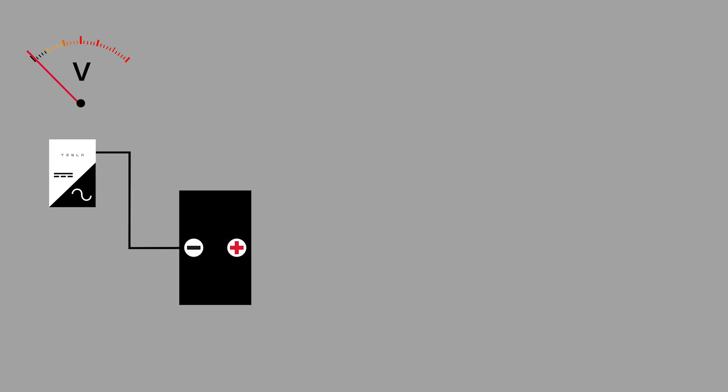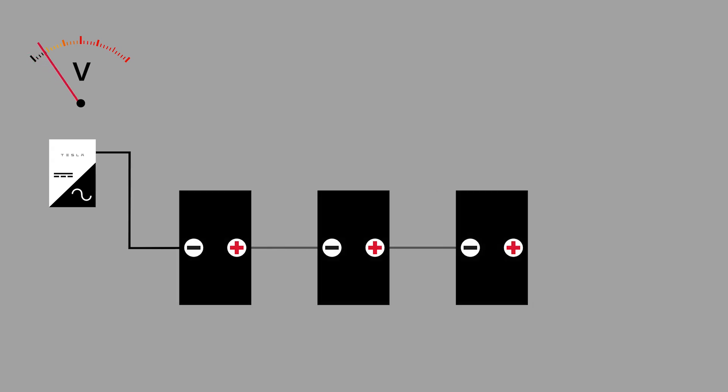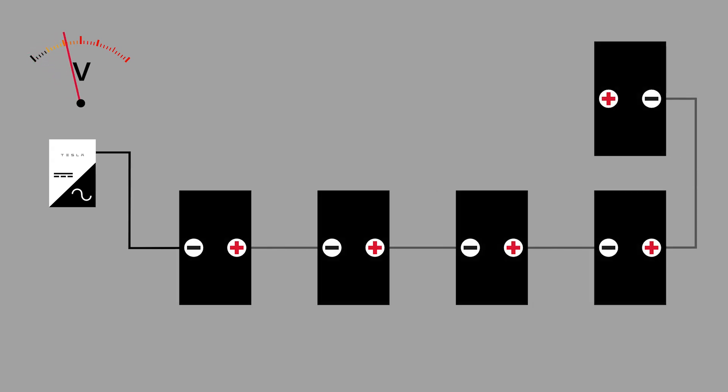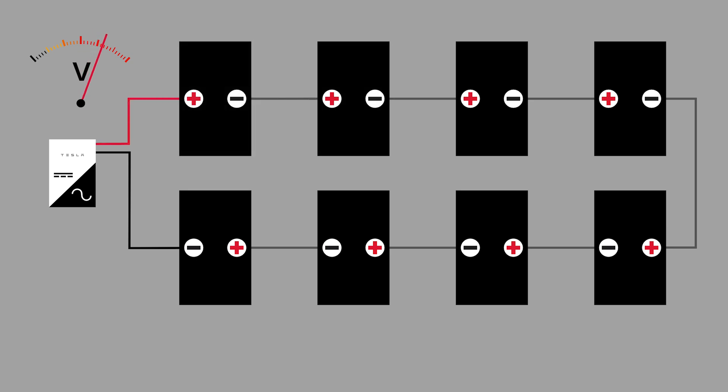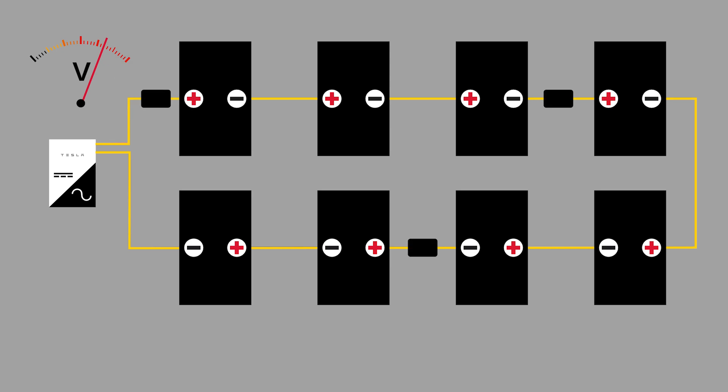In solar arrays, modules are installed in series. With each additional module, the overall voltage of the system increases. Eventually, this voltage raises to the point where safety features need to be added. And this is where the MCI comes into play.